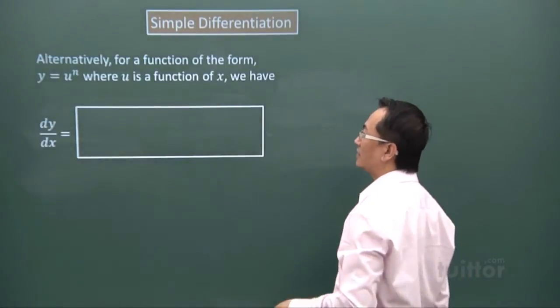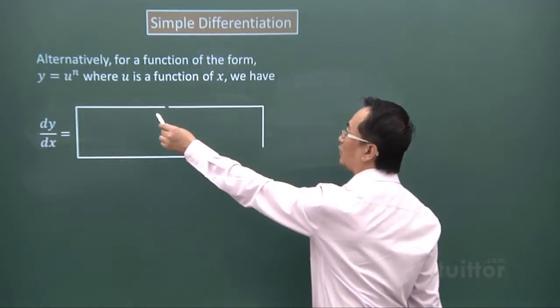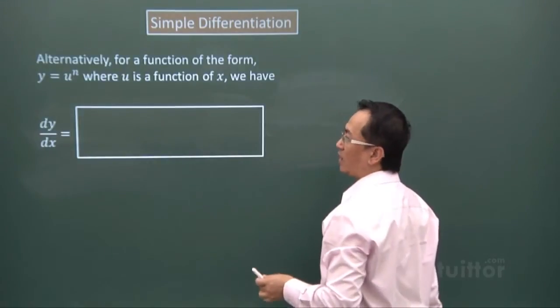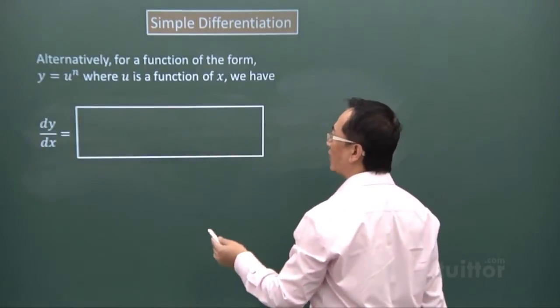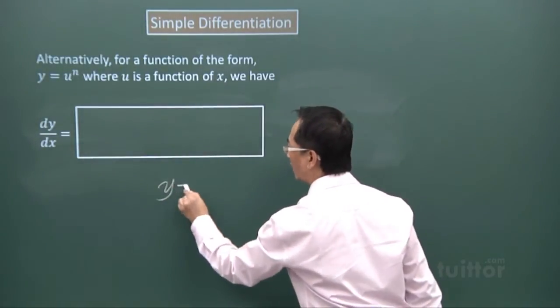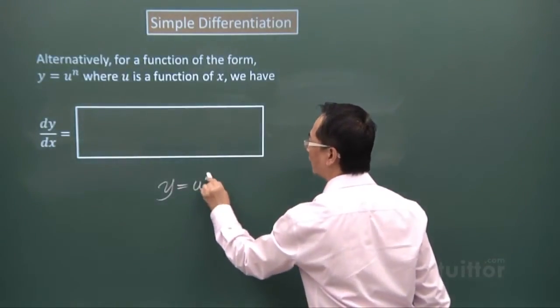Here we have another way to write it. This arrangement of y equals u to the power of n can be reformed into a very simple chain rule equation.